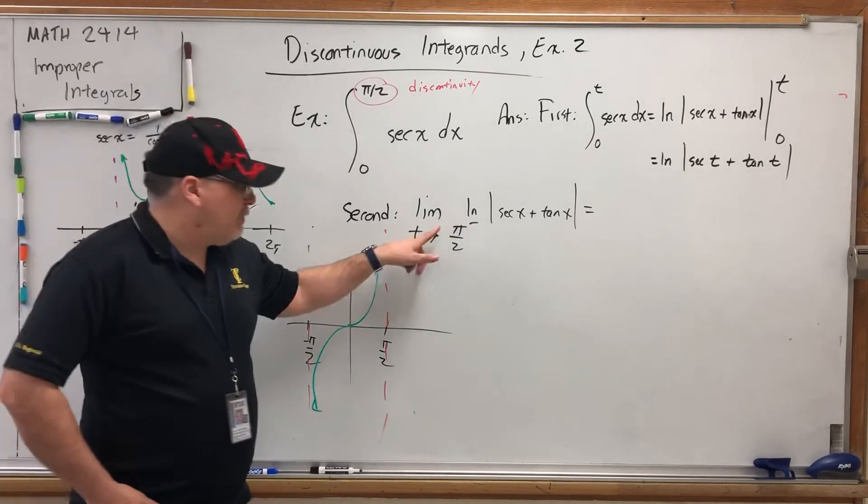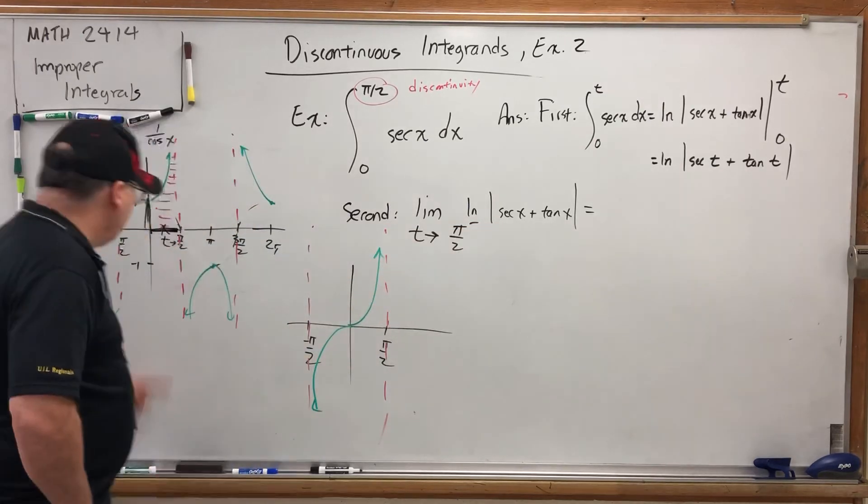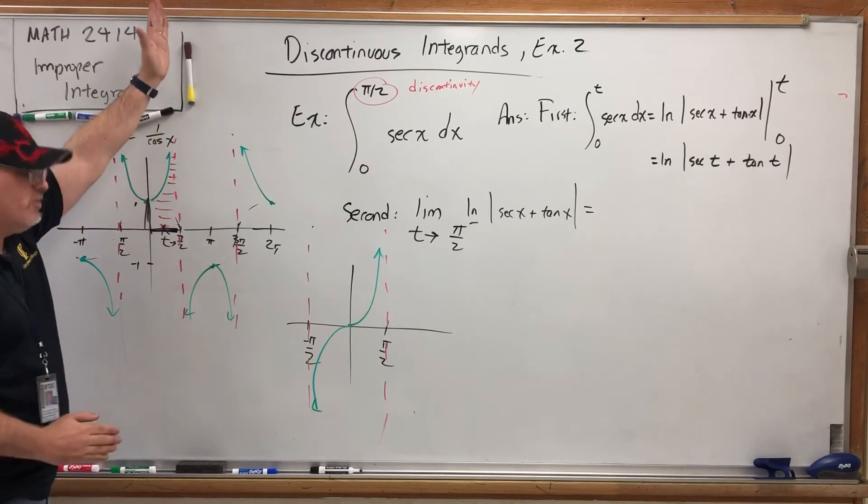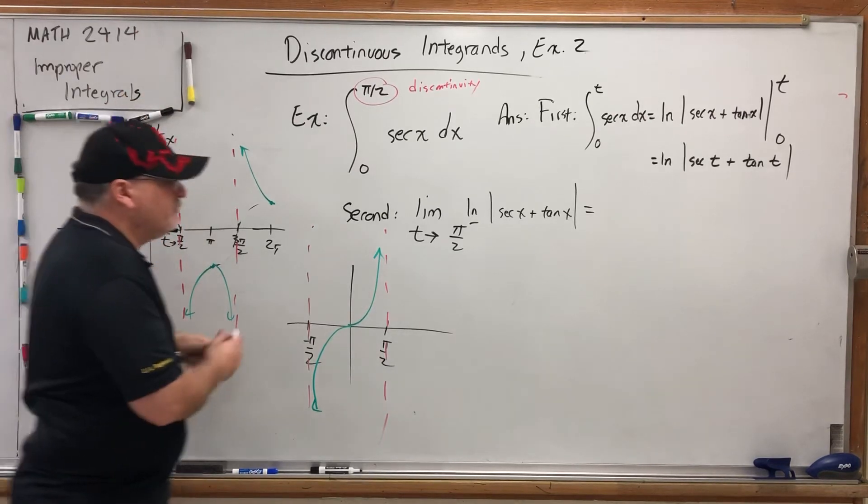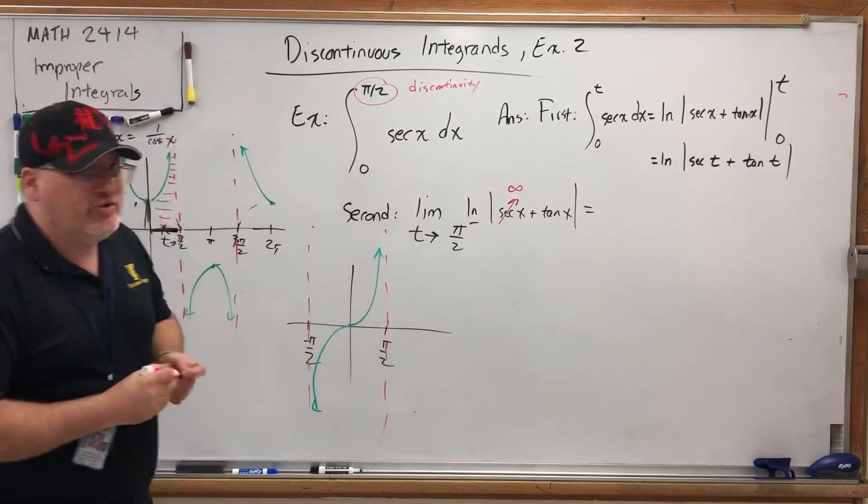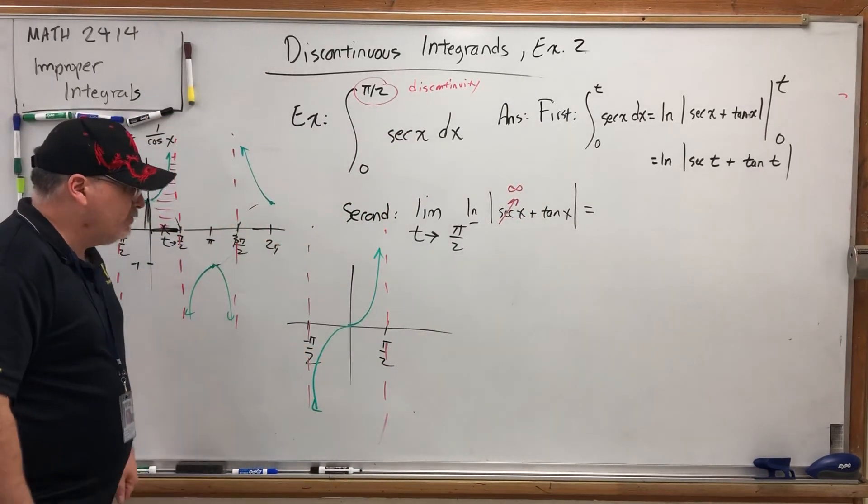So let's talk about what these limits are. As we approach π over 2 from the left of secant, here's the graph of secant, here's π over 2. As we approach it from the left, this graph goes up to infinity. This spells trouble. What this spells is divergence.